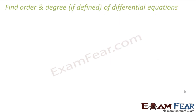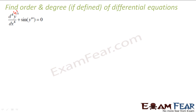Let us take more examples where we define order and degree. First: d⁴y/dx⁴ + sin(y³). The d⁴y/dx⁴ is a fourth order derivative, so order is 4. To find degree, we check: it has a sin function, and it is sin of a derivative. Therefore degree is not defined.